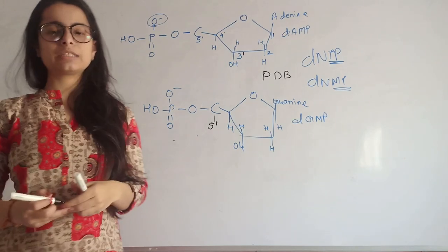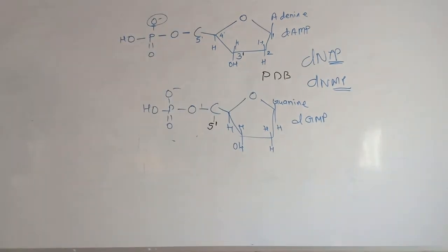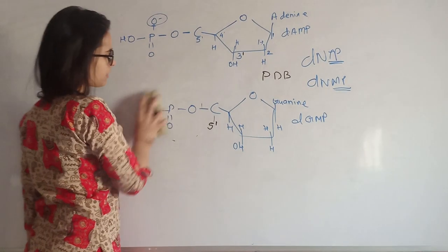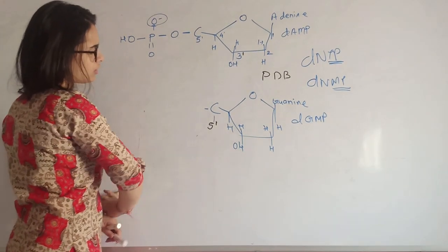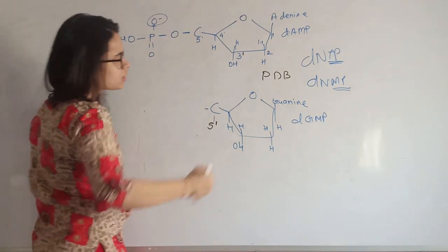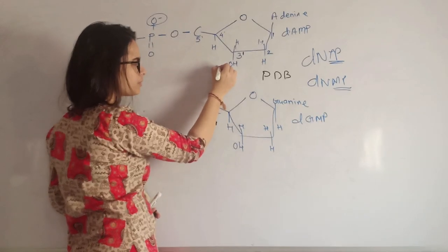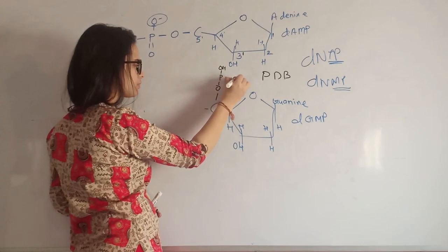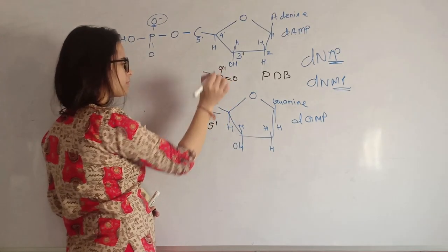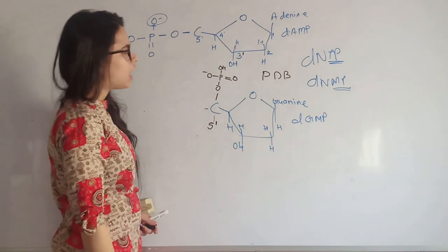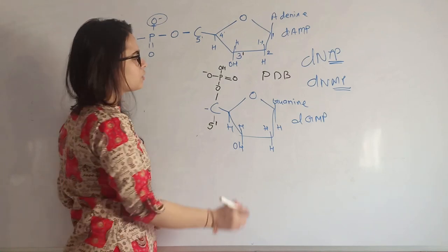Five prime phosphate of one nucleotide and three prime hydroxyl of another nucleotide. Let's see how the ligation is going to take place.